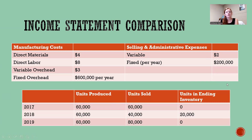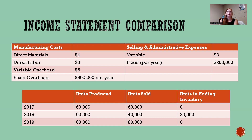Here's how our units produced, sold, and ending inventory look for the three years. In 2017, we produced 60,000 units and sold all 60,000. Let's go down a short rabbit trail: if you produced 60,000 units and sold all 60,000, that's awesome — you don't have anything left in inventory, you sold everything you made, so we have great sales.